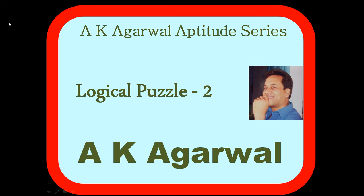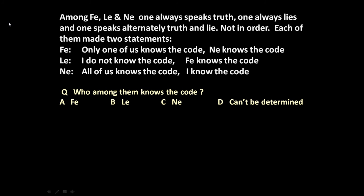Hello friends and welcome to the AK Agarwal aptitude series. In this session we are going to learn a technique for solving a logical puzzle. The given puzzle is: among Phi, Li and Ni, one always speaks truth, one always lies, and one speaks alternately truth and lie. Each of them made two statements.